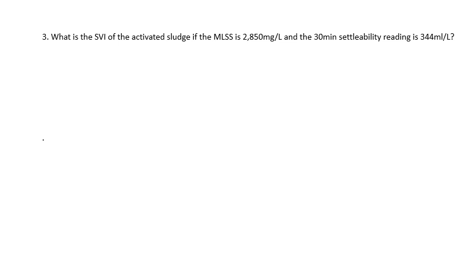What is the SVI of the activated sludge if the MLSS is 2850 milligrams per liter and the 30-minute settleability reading is 344 milliliters per liter? Get your knowns and unknowns out of the question: 2850 mg/L and 344 mL/L, and we're looking again for the SVI.